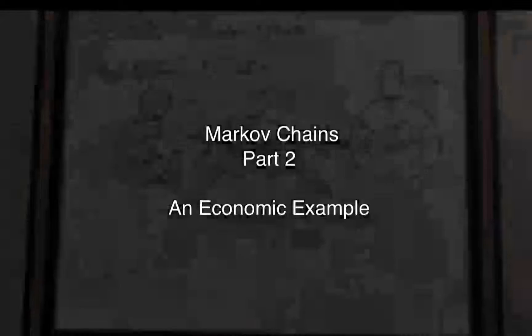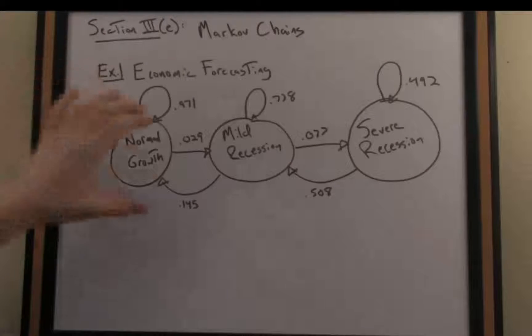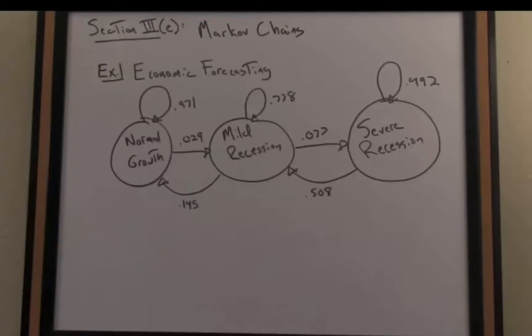Let's now look at two prototypical examples of applications of Markov chains. So what I've drawn here is something called a directed graph. And in a directed graph we have nodes, in this case there are three nodes, or three possible outcomes, and what we're describing here with this graph are transitional probabilities between various outcomes for an economy.